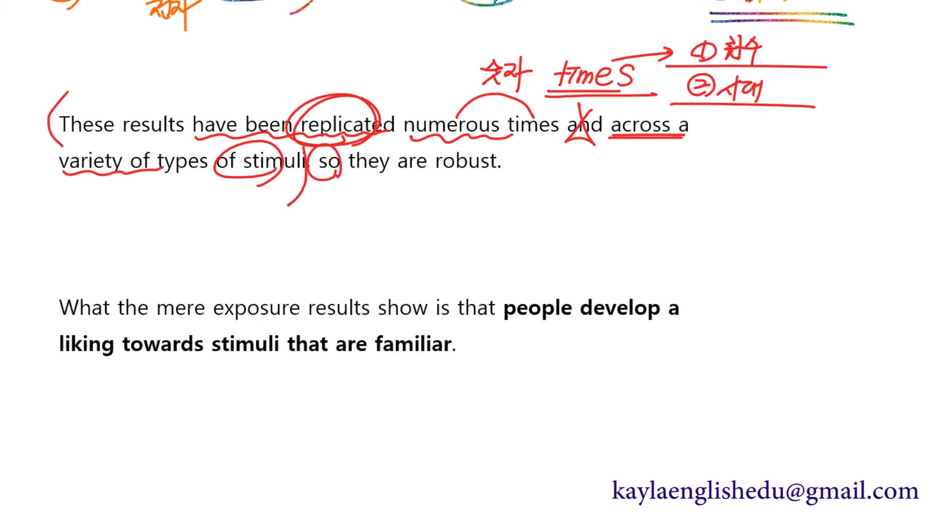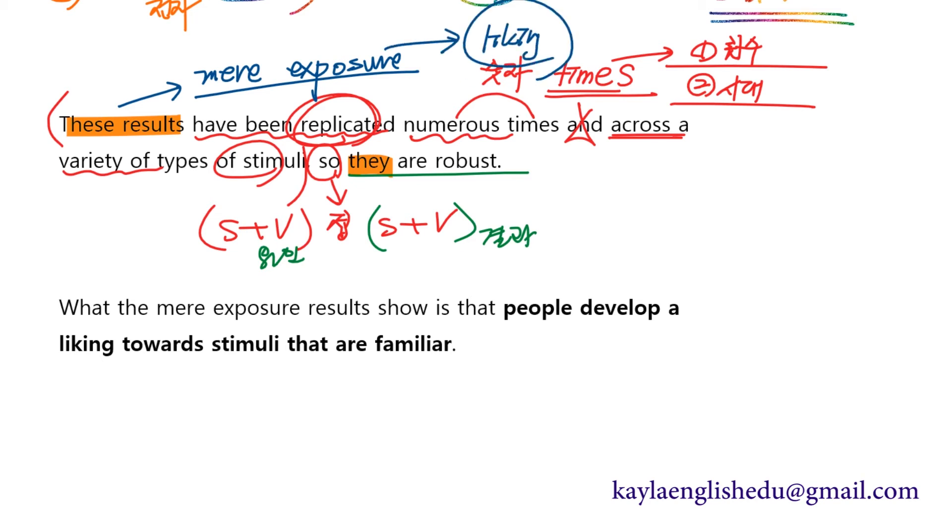so 이것이 원인이 돼서 so 라고 하는 접속사는 앞에 주어동사 문장 나오고 so 접속사 뒤에 주어동사 문장 나오는데 앞에 나와 있는 이 문장은 원인이 되는 문장이고 뒤에 나와 있는 이 문장은 결과가 되는 문장이 나오는 거예요. 그들은 robust하다. 그들이라고 하는 것은 these result를 말을 하는 거고 these result 라고 하는 것은 mere exposure 단순하게 노출시키는 것이 이게 liking 좋아함으로 연결되더라 하는 이 결과는 robust하다. 로버스트는 원래 튼튼한 이런 거거든요. 그런데 이 결과 실험 결과가 튼튼하다라는 것은 그 결과가 굉장히 믿을만하고 이런 의미가 되겠죠.